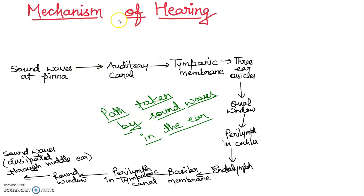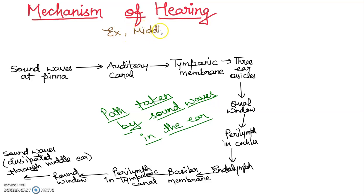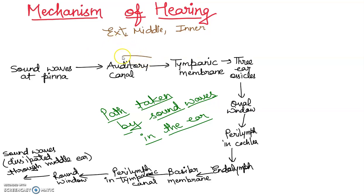In this lecture, we are going to discuss all the mechanisms. We have discussed three parts of the ear: the external ear, middle ear, and internal ear. These are the three parts we covered in detail. As the sound waves enter the external ear, they pass through the ear canal, also called the auditory canal.